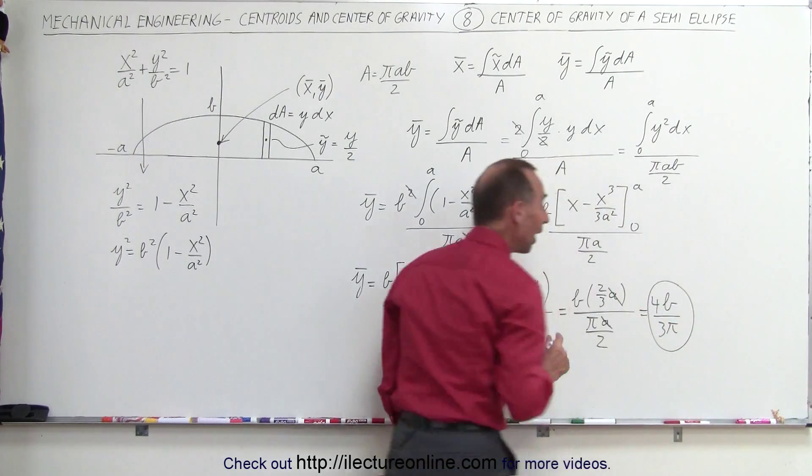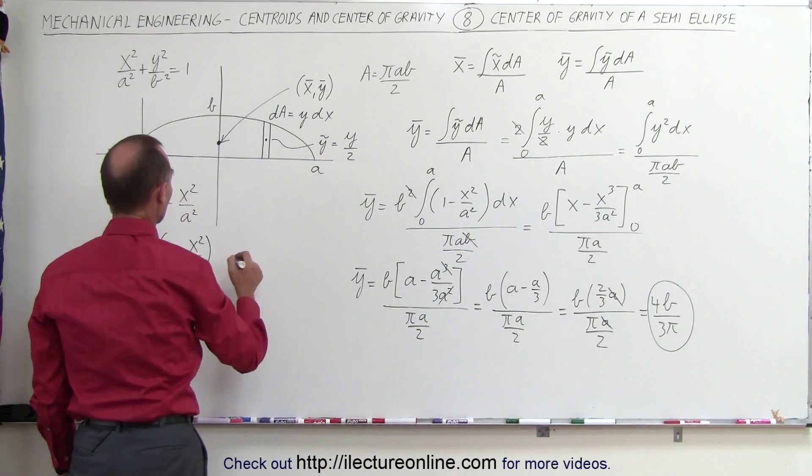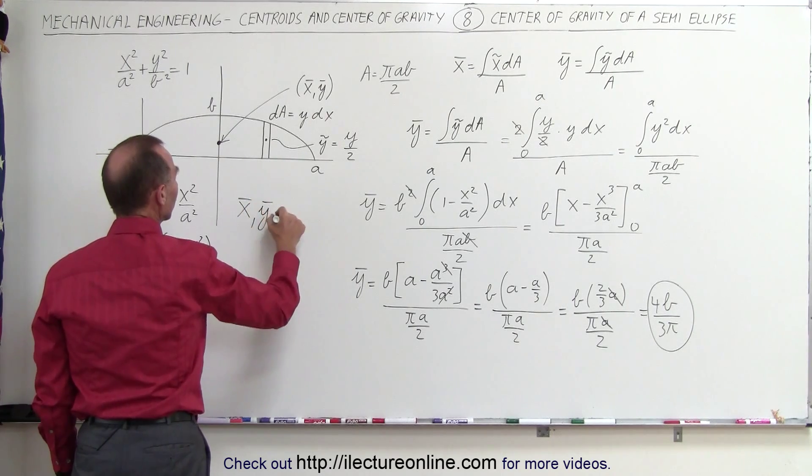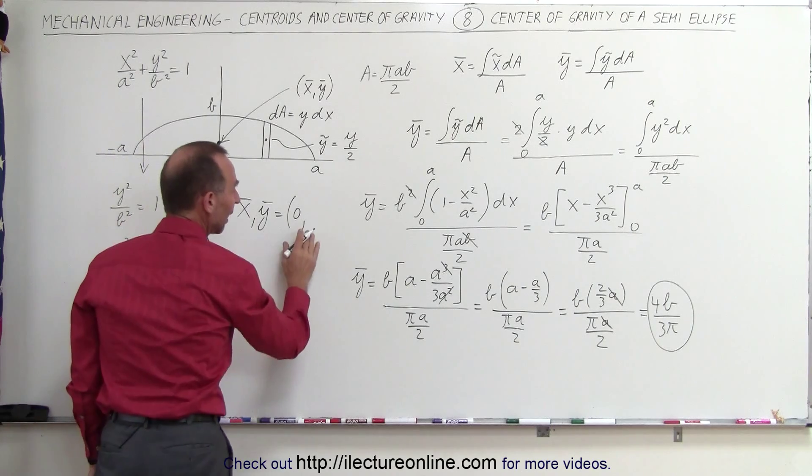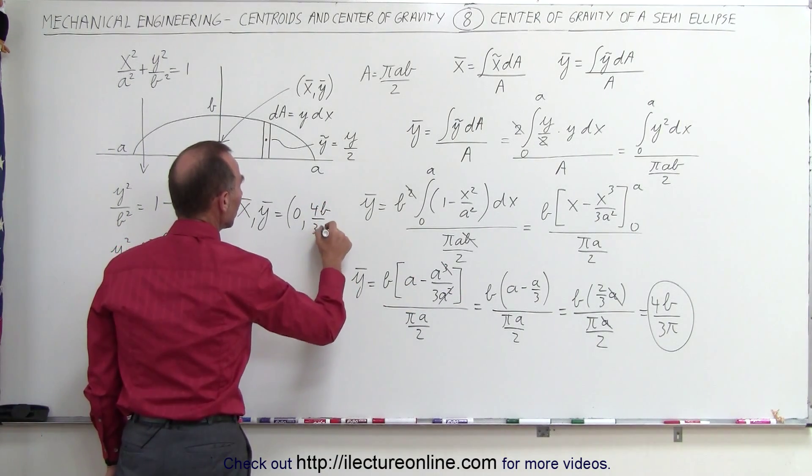And that would be the y-coordinate of the center mass of this semi-ellipse. If you want to write the answer, we have the x and the y-coordinates. That's going to be equal to 0 for the x-coordinate, because it's right there on the y-axis. And for the y-coordinate, we get 4b divided by 3π.